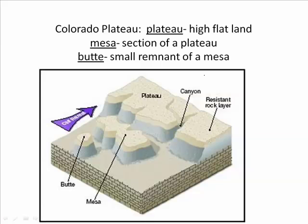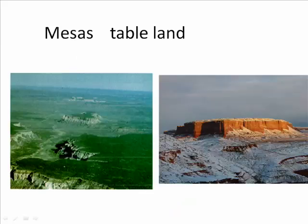As a plateau is cut by its canyons, chunks of the plateau are separated from it and are called mesas. A smaller chunk of the plateau left behind is a butte — a small remnant of a mesa. In this diagram, you can see a plateau in the foreground and a mesa behind it, which could also be called a tabletop mountain.